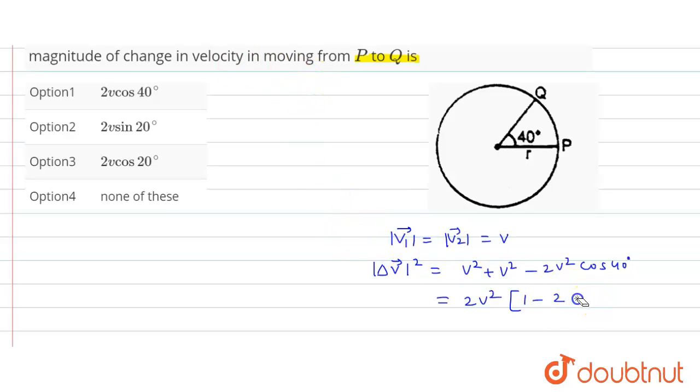We can write 2 into sine squared 20 degrees. So from here, this is equal to 4v squared sine squared 20 degrees.